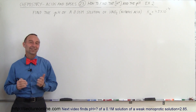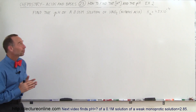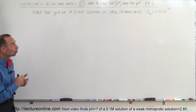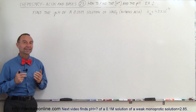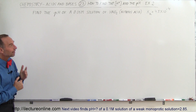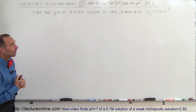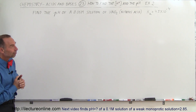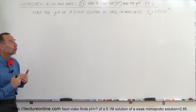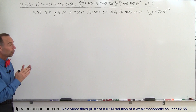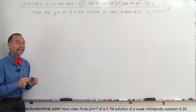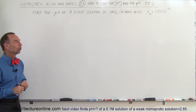Welcome to Electronline. Here's our next example. We have a 0.05 molar solution of nitrous acid, and the ionization constant for nitrous acid is 4.5 times 10 to the minus 4. What we're trying to find is the concentration of the hydrogen ion and the pH of the solution.